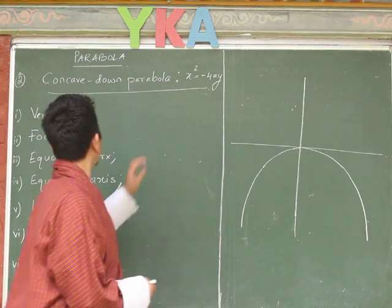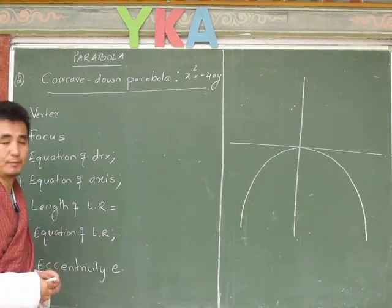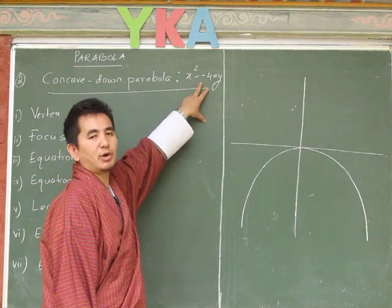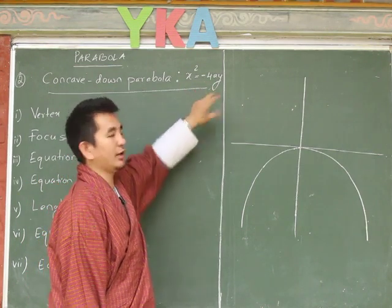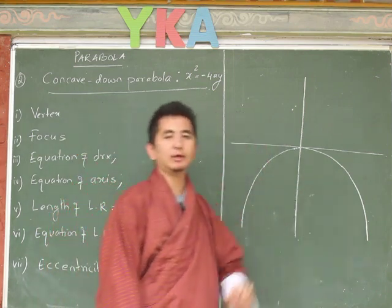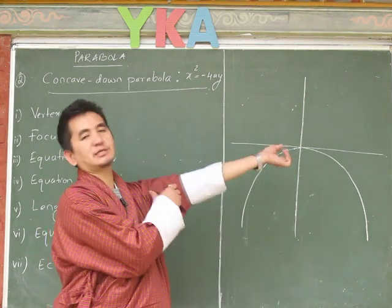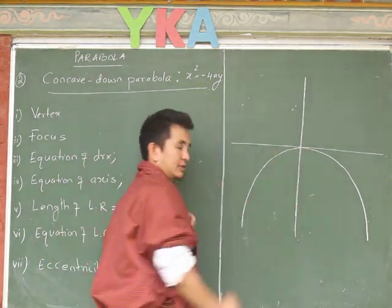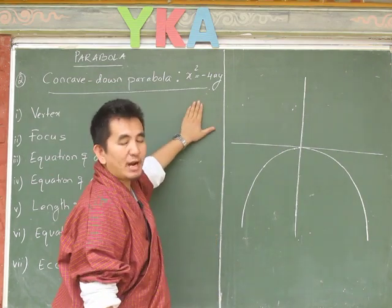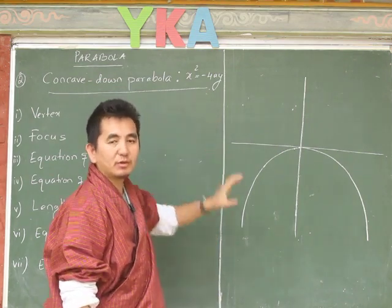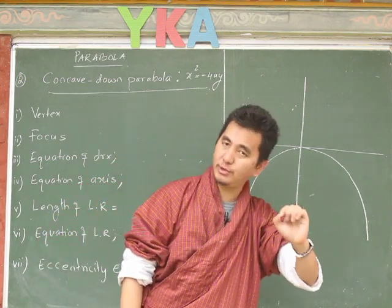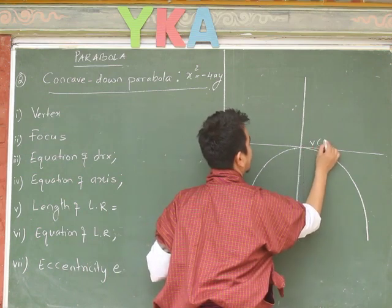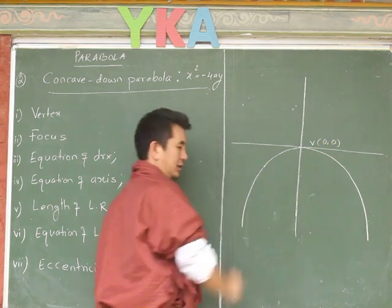Without wasting time, let's start with the concave down parabola. The equation is given by x² = -4y. This is a standard form of a concave down parabola. As I explained in the previous video, the vertex of a standard parabola is always at the origin, so here vertex is at (0, 0).